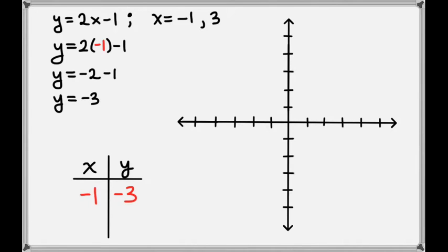Let's go ahead and plot this point on the graph. The negative 1 means we'll go to the left 1 from the origin, and then we'll go down 3. So this is the point negative 1, negative 3 on our line.